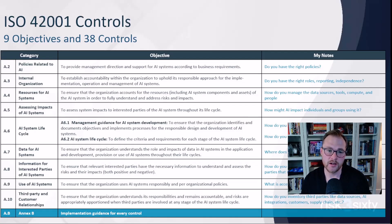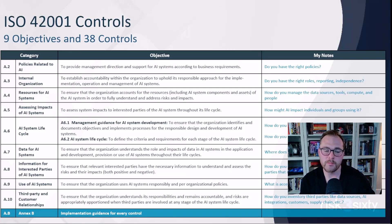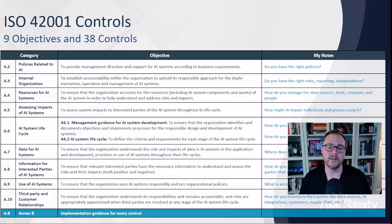Next up, I want to talk about NXA, which covers the nine control objectives and 38 controls for ISO 42001. I'm not going to speak in detail about every control or control objective, but I at least want to give you a great overview of what to expect when it comes to interpreting the controls and the general concepts of ISO 42001. I'll also be pulling apart some of the big picture principles like the policies, the AI risk assessment, and the AI impact assessment in upcoming lectures.